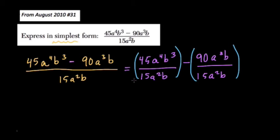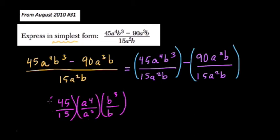the rest is fairly straightforward because in the first term, we have 45 over 15 times a⁴ over a². I'm just dividing like terms, and then b³ over b. So the same variables are being divided and the same numbers are being divided. And you don't have to write this step out. I just want to make it clear for you.